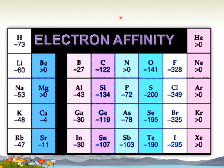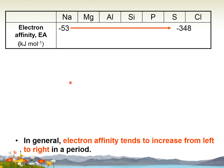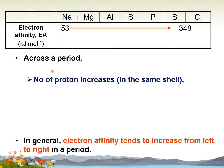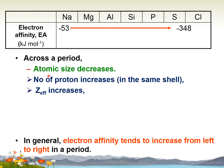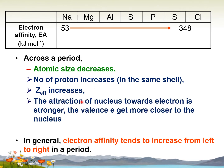This is the periodic table which shows the trends for electron affinity. Referring to numerical values, not the sign, you can see that across the period it is increasing, and going down the group it is decreasing. Across a period, in general, electron affinity tends to increase from left to right. The number of protons increases within the same shell, meaning Zeff increases, atomic size decreases, the attraction of the nucleus towards the electron is stronger, the valence electron gets closer to the nucleus, and EA increases.